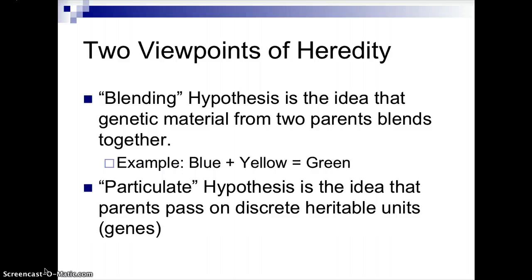The blending hypothesis was the idea that genetic material from two parents blended together. This would be like an art class — if you take blue paint and yellow paint and mix them together, you get green paint. This hypothesis did stand for a little bit; however, there wasn't enough credible information to back it up, and it did not work when Charles Darwin, the father of evolution, was trying to apply some of these principles in his studies. So we knew this hypothesis did not stand true — it did not support the way genetics work.